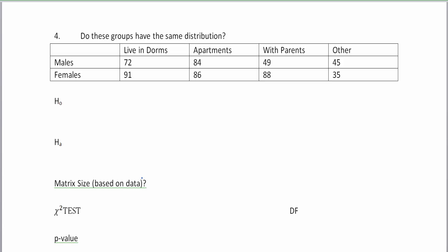Do these groups have the same distribution, the men and women? Do college students choose to live in dorms, apartments, with parents, or other, and is there a difference between the genders? The null hypothesis is the distributions of the males and females are the same. Then the distributions of the males and females are not the same.